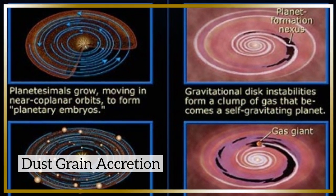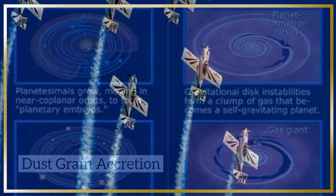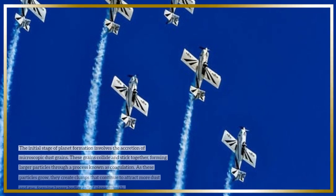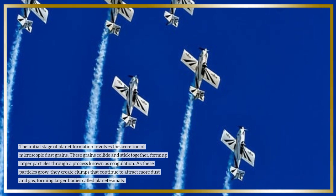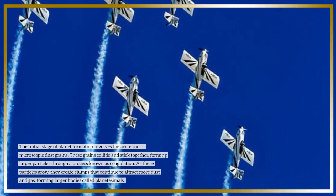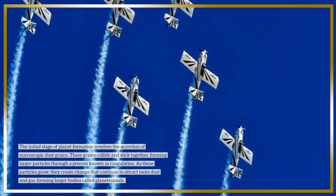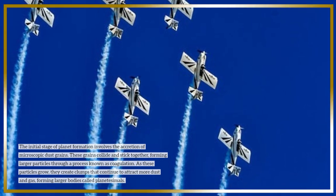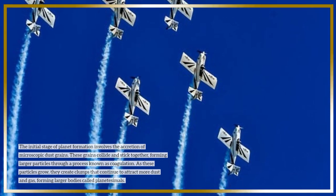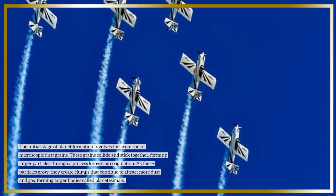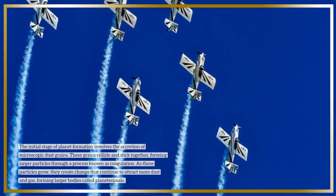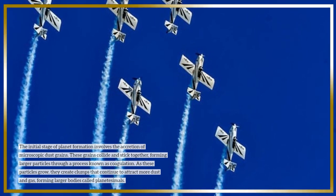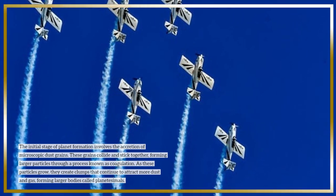Dust grain accretion. The initial stage of planet formation involves the accretion of microscopic dust grains. These grains collide and stick together, forming larger particles through a process known as coagulation. As these particles grow, they create clumps that continue to attract more dust and gas, forming larger bodies called planetesimals.